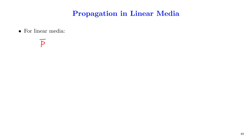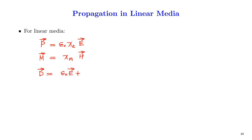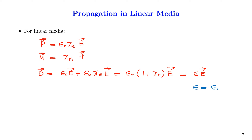Inside a linear media, the polarization P depends only on the external field E through constants ε₀ and χ_e, where χ_e is the electric susceptibility. Therefore, the electric displacement vector D = ε₀E + ε₀χ_eE = ε₀(1 + χ_e)E = εE, where ε = ε₀(1 + χ_e) is known as the permittivity of the material.